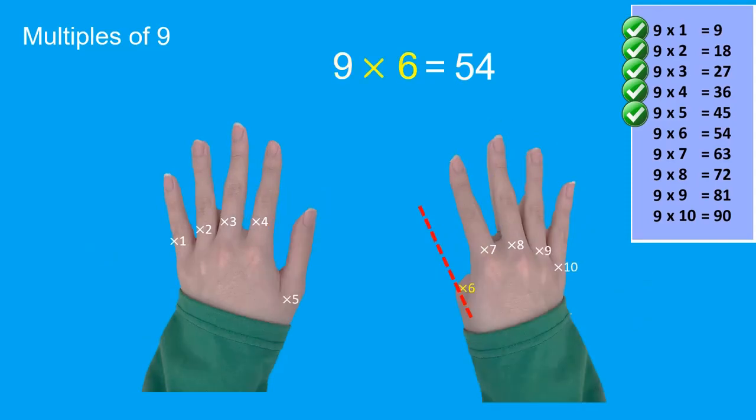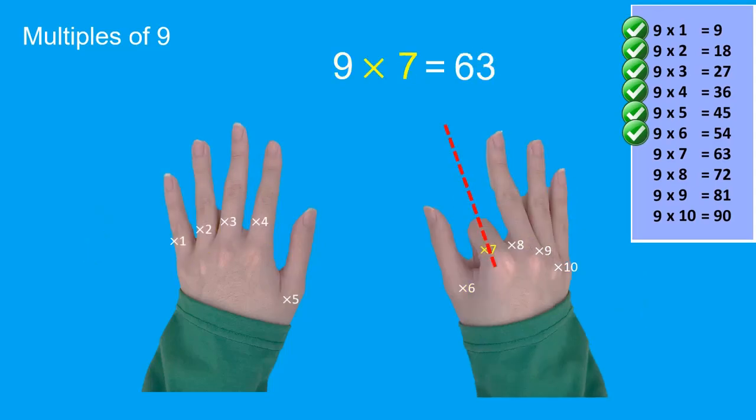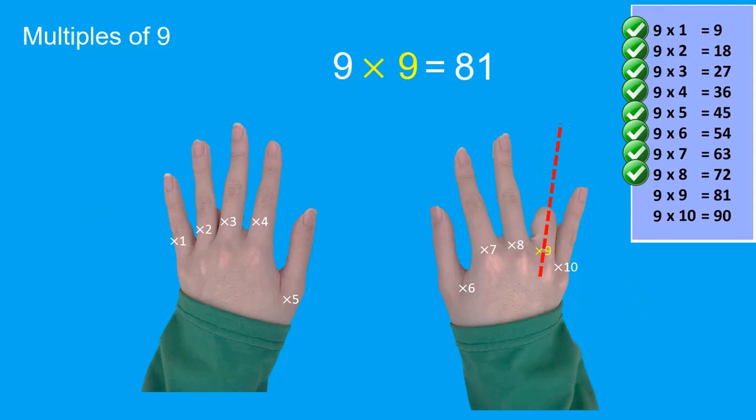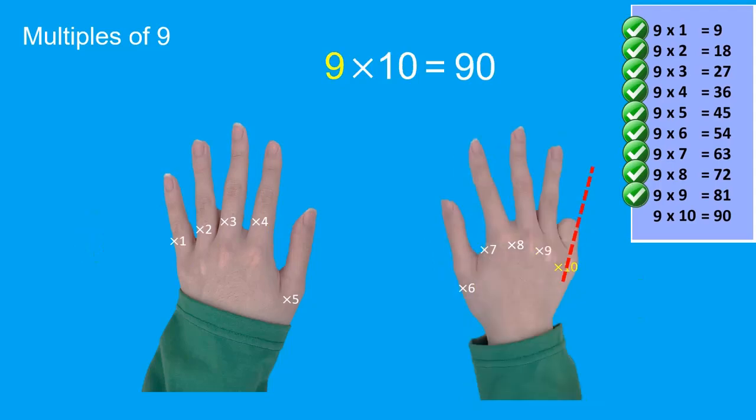Nine six fifty-four, nine seven sixty-three, nine eight seventy-two, nine nine eighty-one, nine ten ninety.